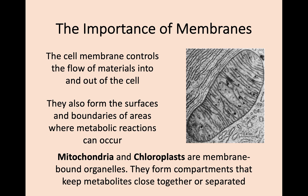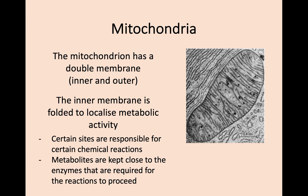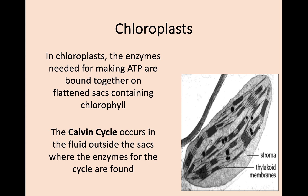We'll talk more about the mitochondria in the next key area, but first let's look at its structure. Each mitochondrion has two cell membranes — an outer membrane, and also a folded inner membrane. This inner membrane is responsible for certain chemical reactions, and metabolites and enzymes required for some reactions are centralised in these inner membranes. Similarly, chloroplasts have the enzymes required for generating ATP bound together on flattened sacs containing chlorophyll, again for processes we'll be discussing later on in the course.